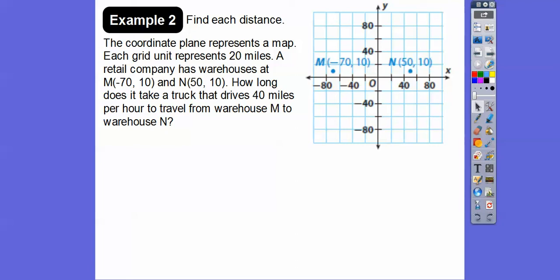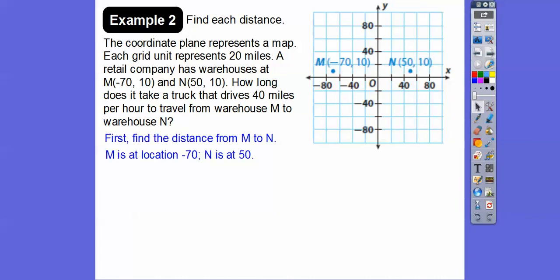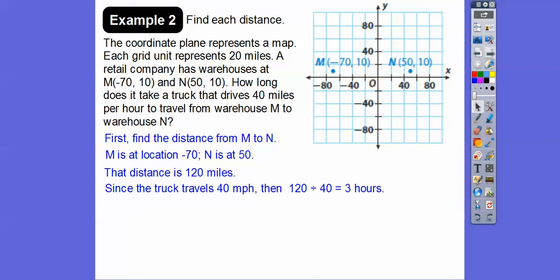The coordinate plane represents a map where each grid square represents 20 miles. A retail company has warehouses at points M and N. How long does it take a truck traveling 40 miles per hour to travel from warehouse M to warehouse N? We've got to find the distance — counting by twenties: 20, 40, 60, 80, 100, 120. So there's 120 miles between M and N. We divide 120 by 40, and that's going to take three hours.